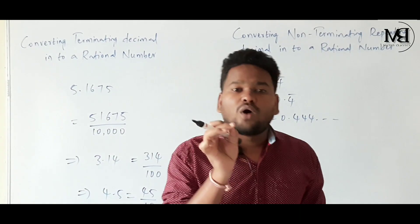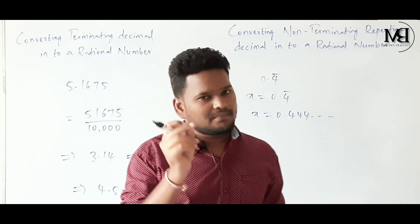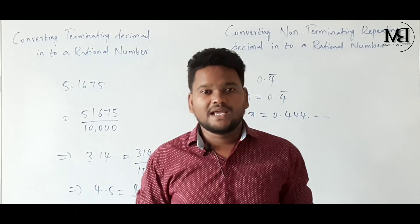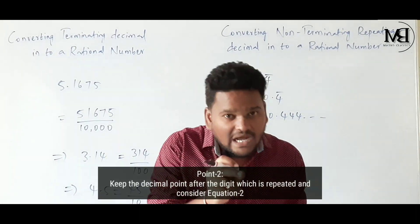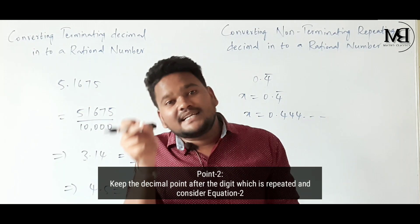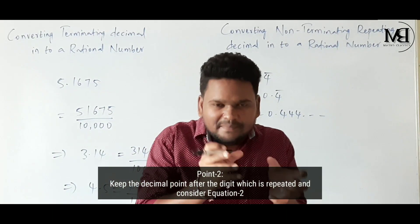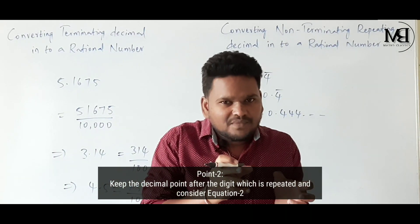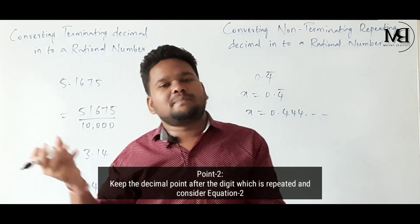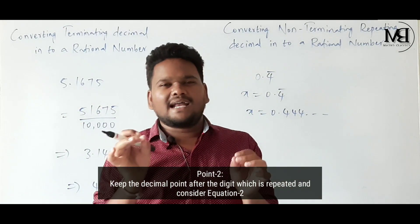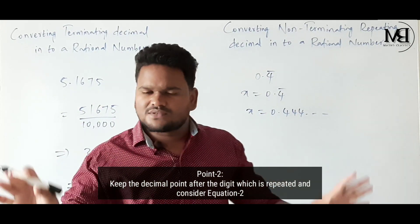Point number 2: keep the decimal point after the digit which is repeated, and then consider it as equation 2.